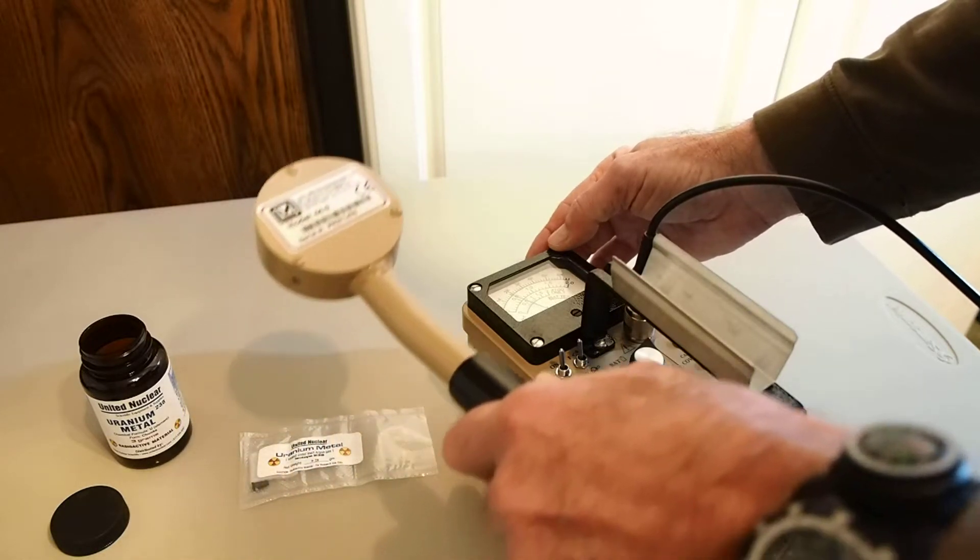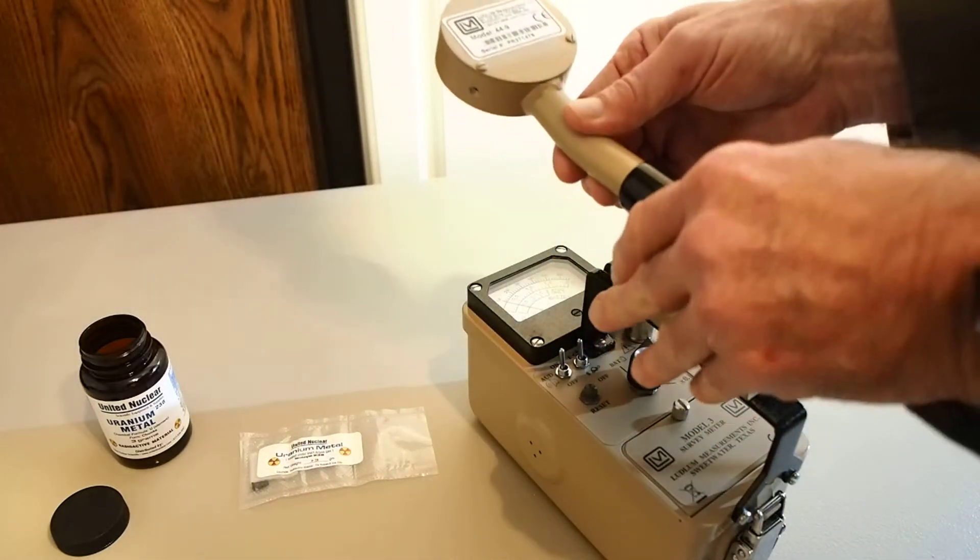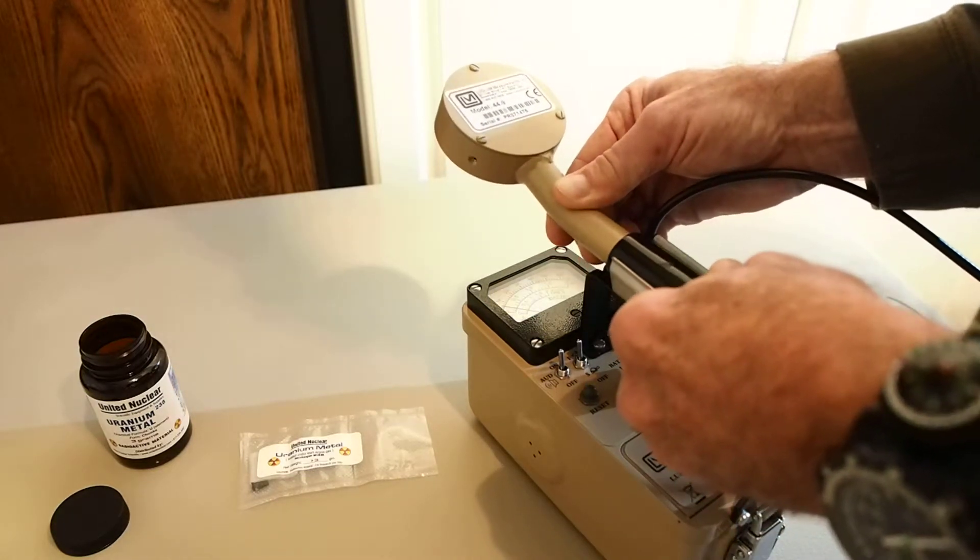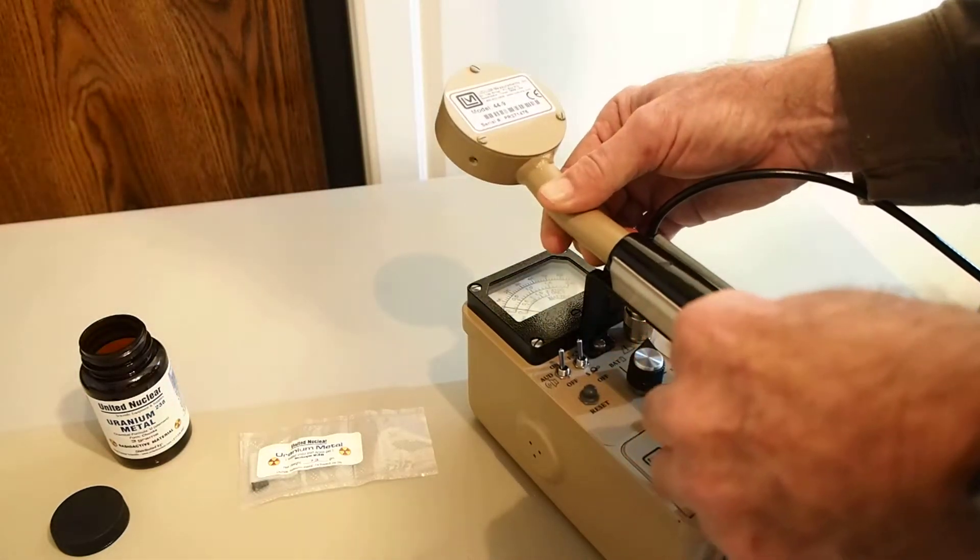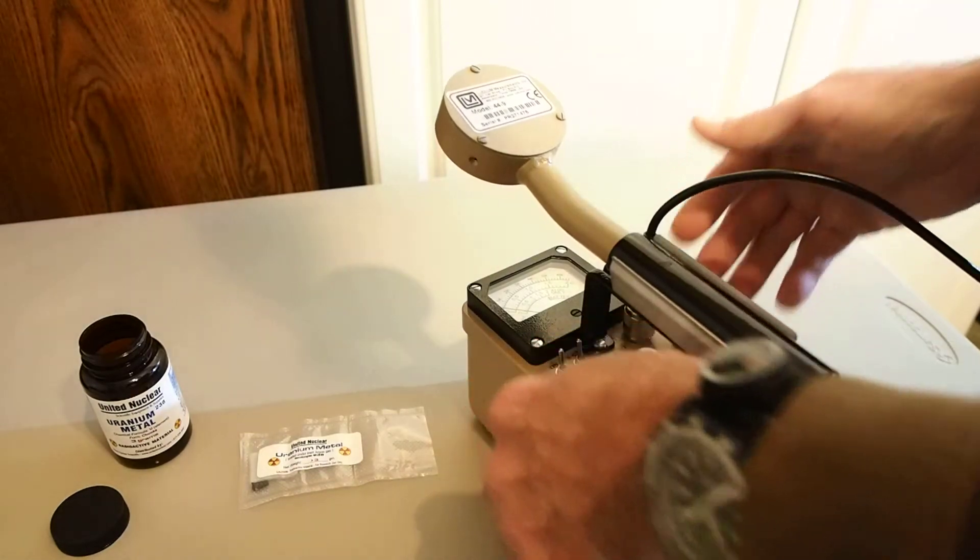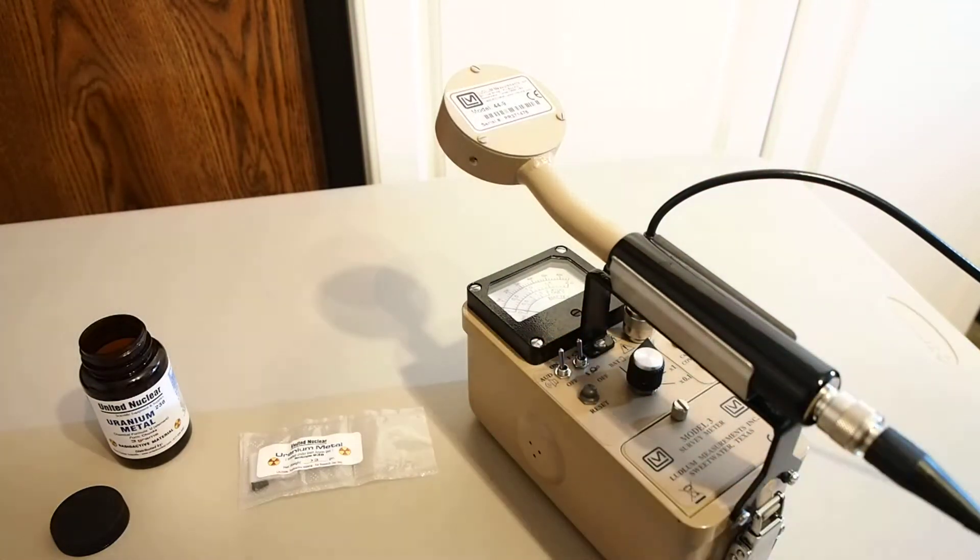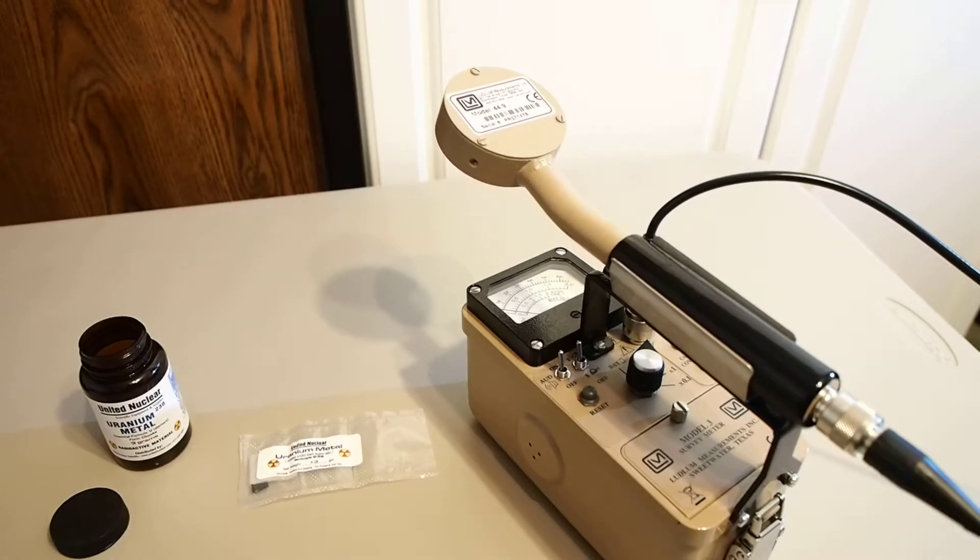So what I'm going to do is place the 44-9 back in the handle attachment of the survey meter, reset our instrument, and we'll see if we can get a little bit closer view of the instrument and the specimen.